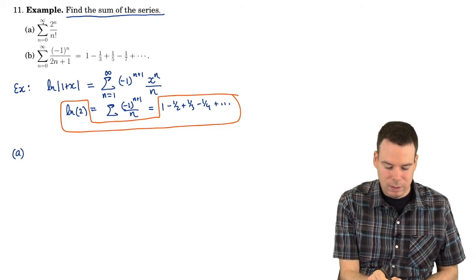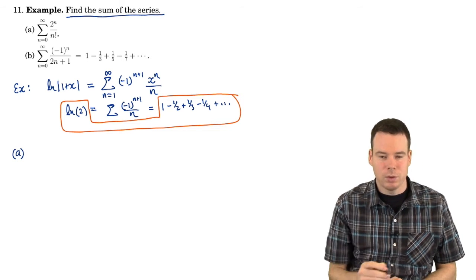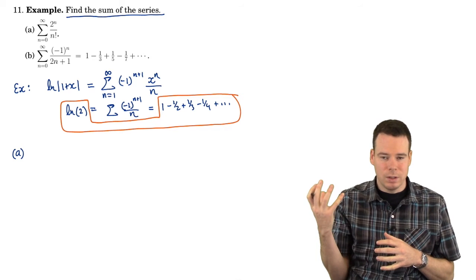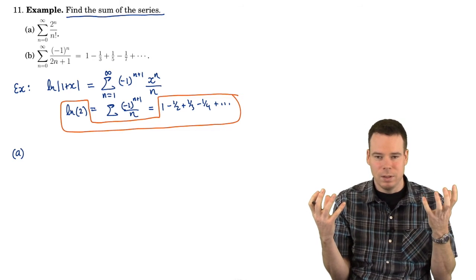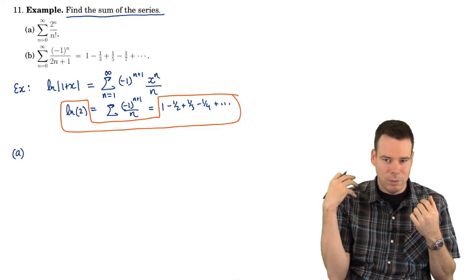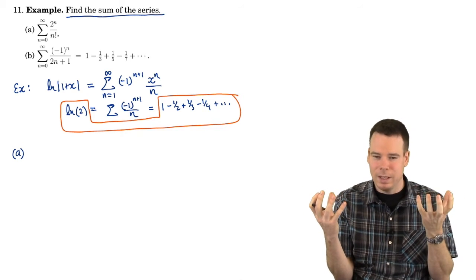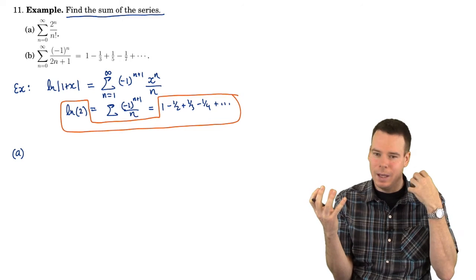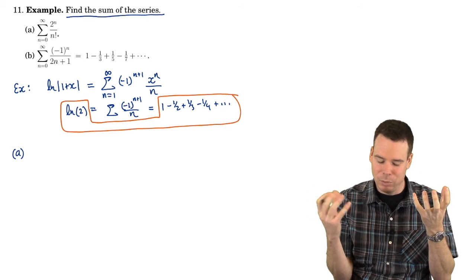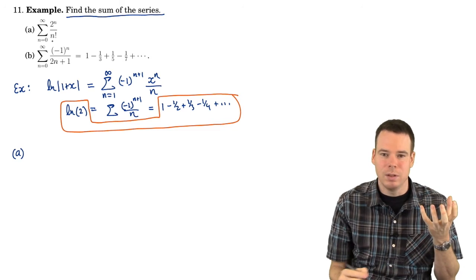I've got this series, the sum of 2 to the n over n factorial. Can I find a function and its Taylor series so that evaluating the function at a particular number is the same as evaluating the Taylor series at that number, and when I evaluate the Taylor series at that number it is precisely this 2 to the n over n factorial?